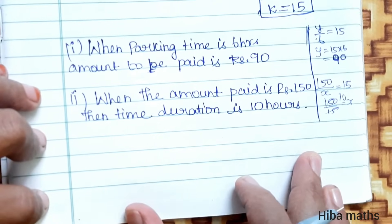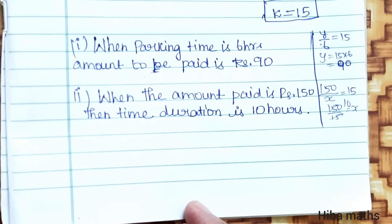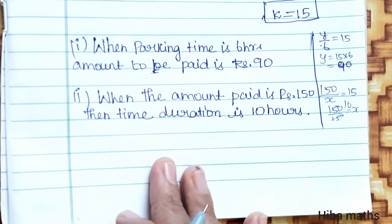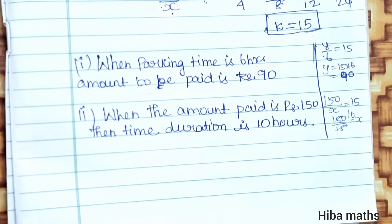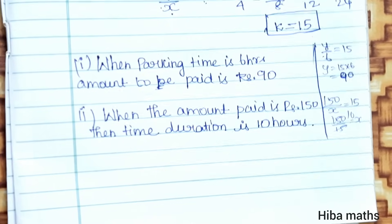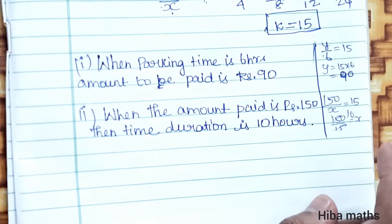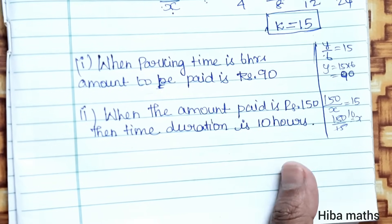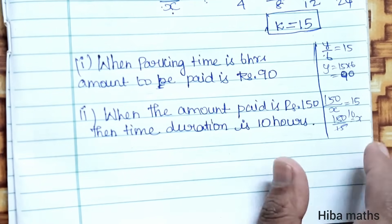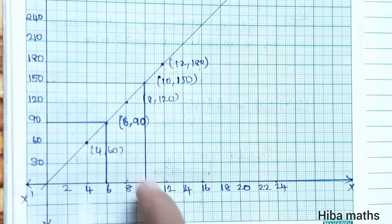If you write the statement, you will get the solution clearly. In the type sums, attend the graph carefully. This is an example sum, and the same type of sum is solved in the same way. The graph is also solved similarly.